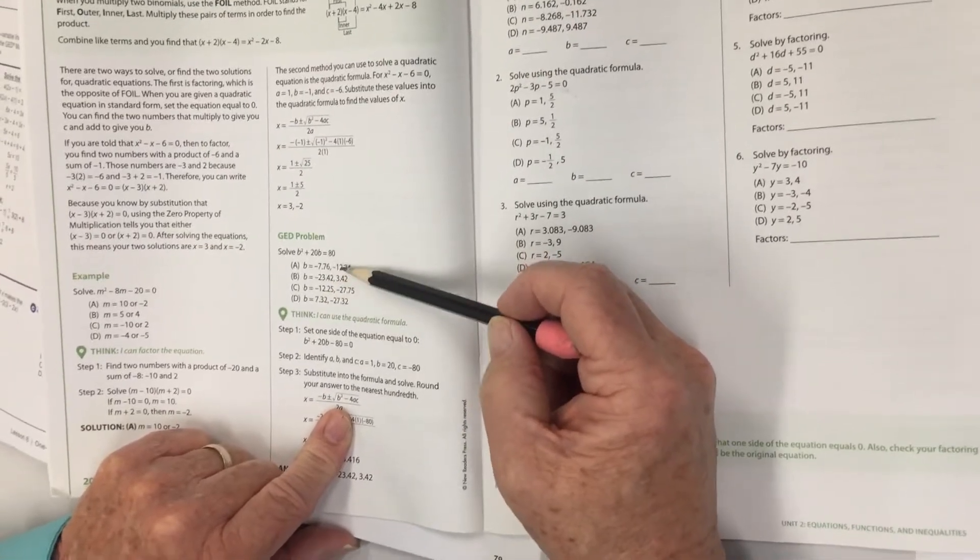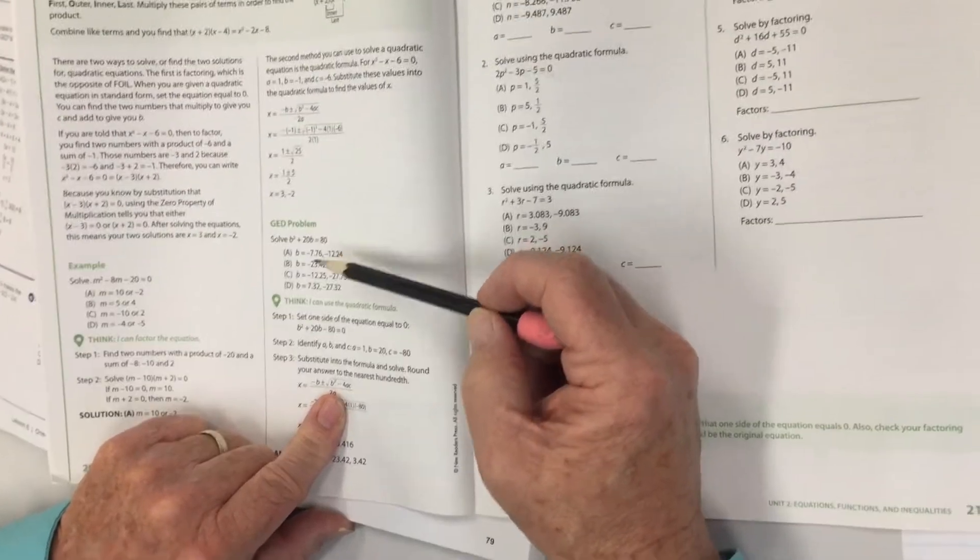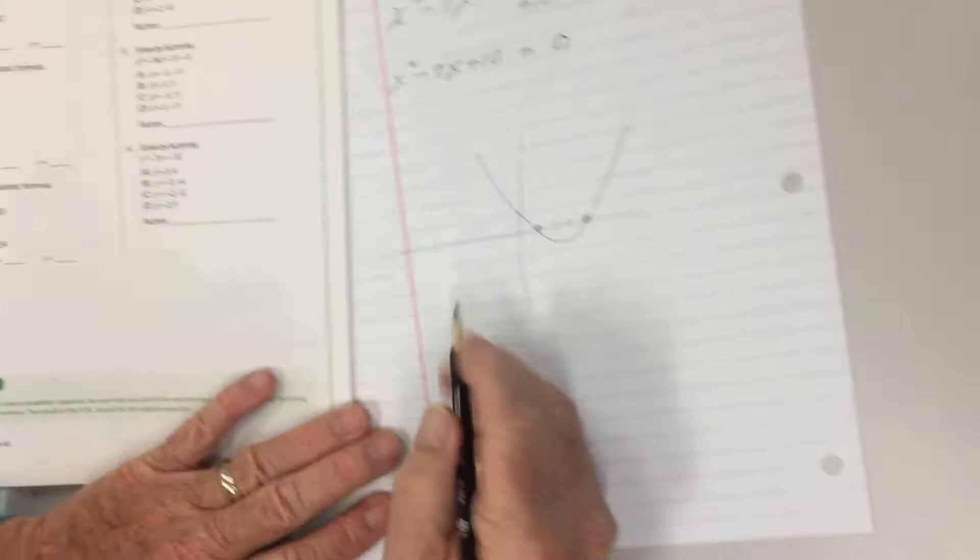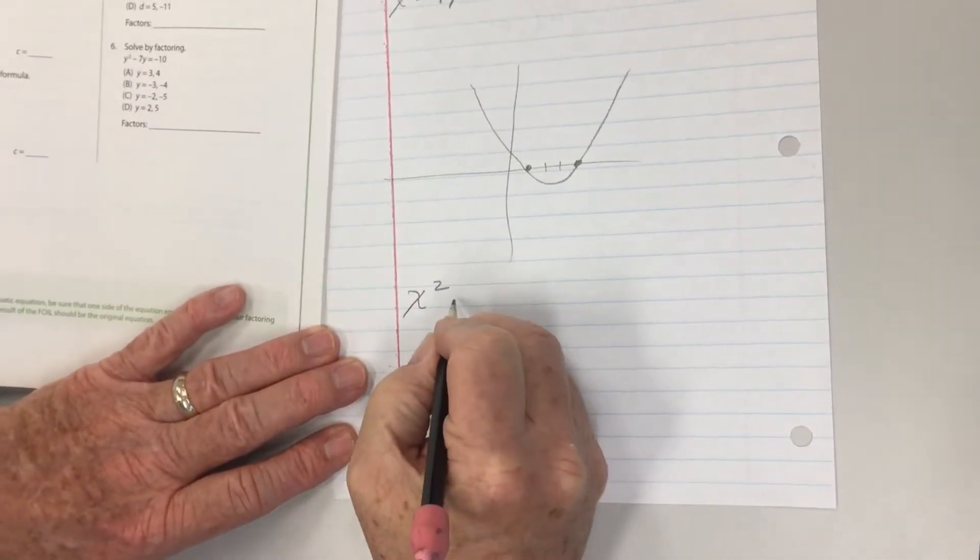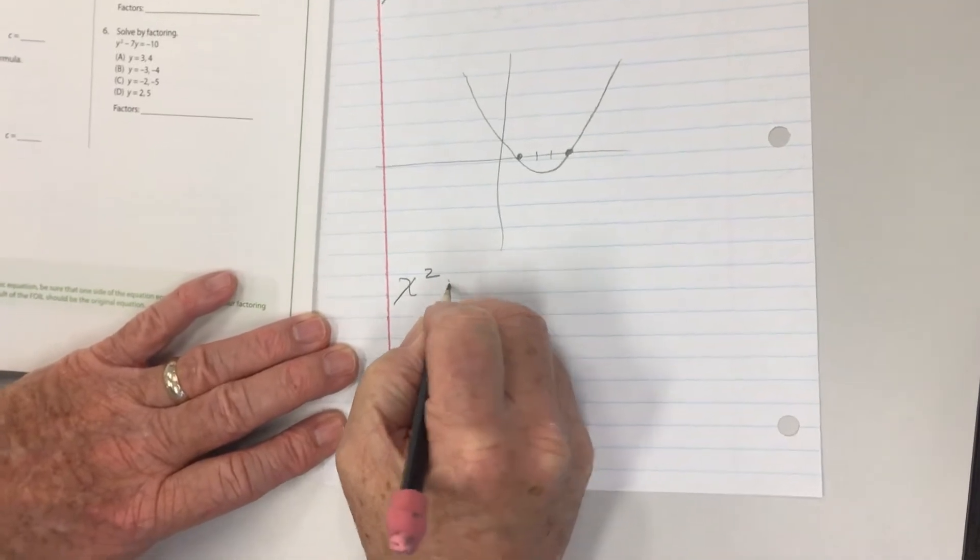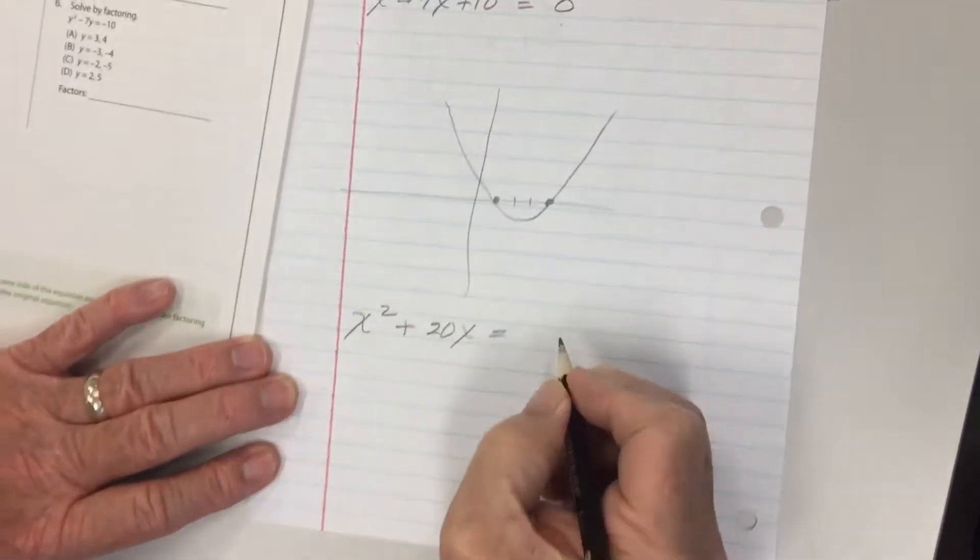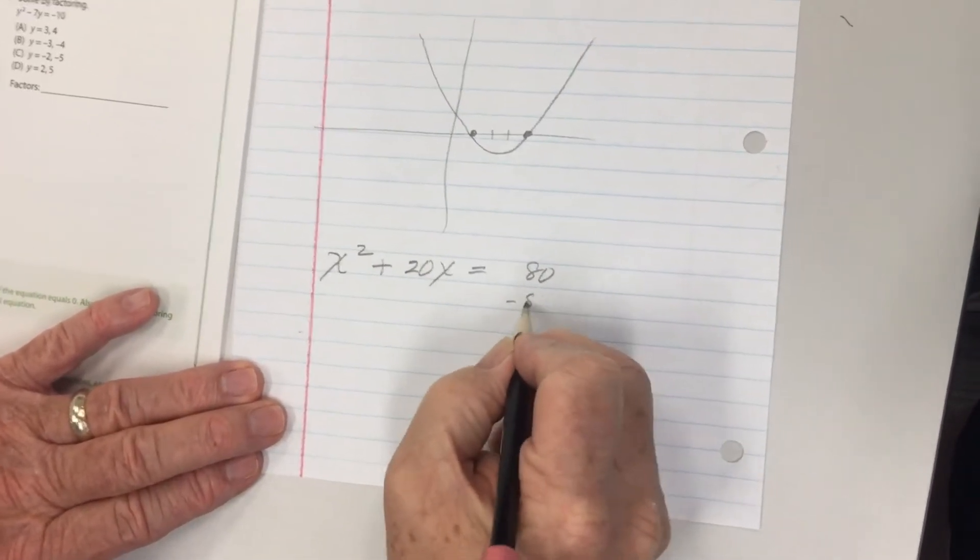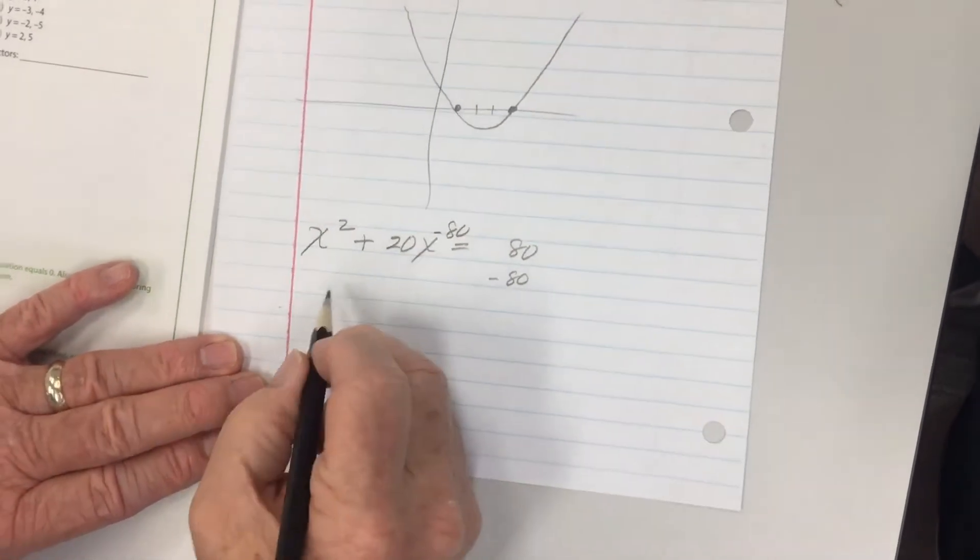...how it works out. Now, it probably will not be exactly equal to zero, but I think the answer will be real close to zero. So I've got to do the same thing. So coming over here, I'm going to do x squared plus 20x equals 80.